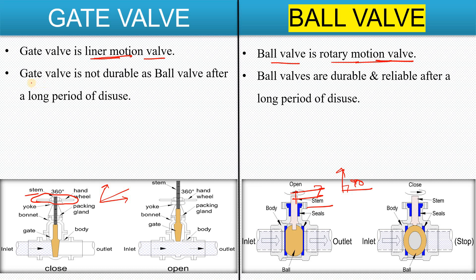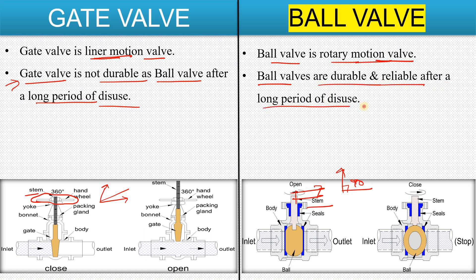With respect to durability, the gate valve is not as durable as the ball valve after a long period of disuse. In lines that only open or close infrequently — such as during shutdown or startup — gate valves are not as suitable. Ball valves are more durable and reliable after long periods of disuse. Leakage problems are more commonly seen with gate valves in such scenarios.